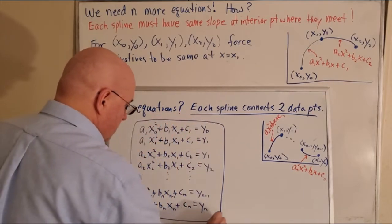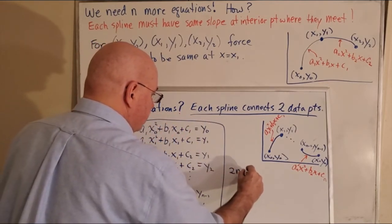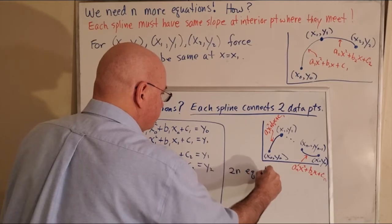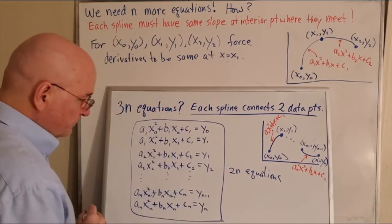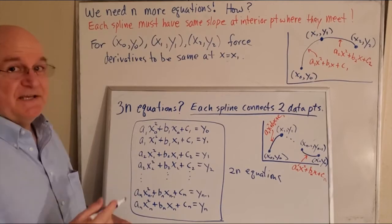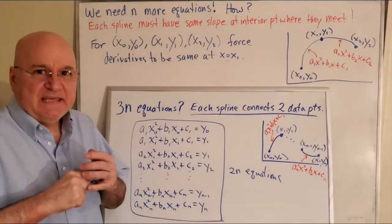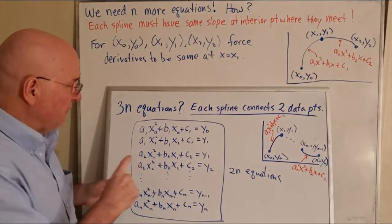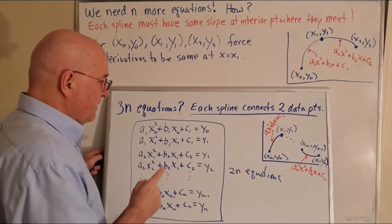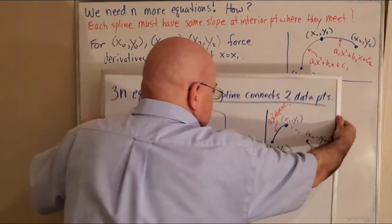So here are 2n equations. We only need n more, and the n more we'll see in the next chart. So 2n equations, now let's find the other n.